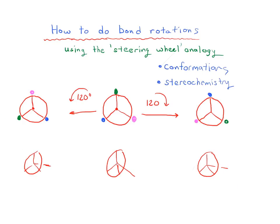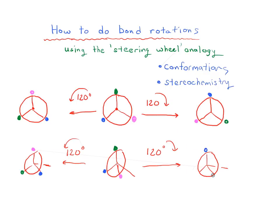Let's think about what your steering wheel looks like in each orientation from this side angle, with all the decorations. In the normal orientation we have pink, blue, and green. Repeating this for the other rotations: we have blue and pink in the second example. In the third case — rotated 120 degrees to the left — we have blue at the top, green at the bottom right, and pink at the bottom left. So these are the three orientations looked at from a different angle.